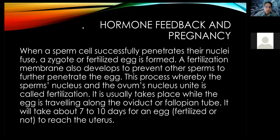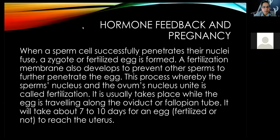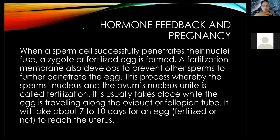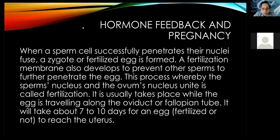Hormone feedback and pregnancy: when a sperm cell successfully penetrates and the nuclei fuse, a zygote or fertilized egg is formed. A fertilization membrane also develops to prevent other sperm from further penetrating the egg. This process whereby the sperm nucleus and the ovum nucleus unite is called fertilization. It usually takes place when the egg is traveling along the oviduct or fallopian tube. It will take about 7 to 10 days for a fertilized egg to reach the uterus.